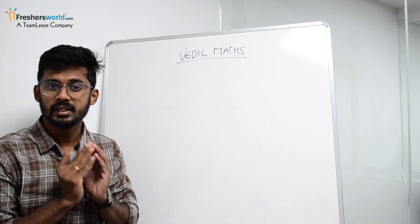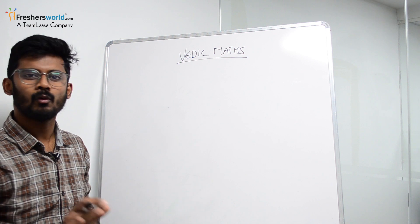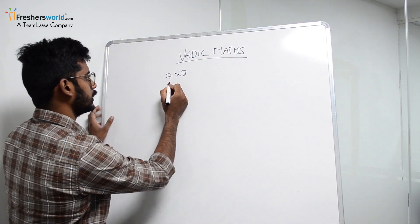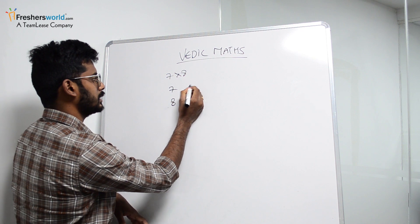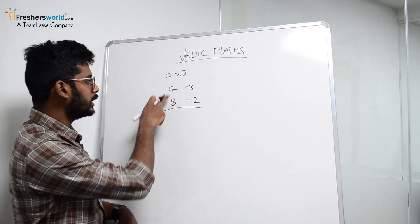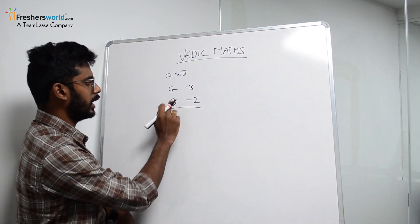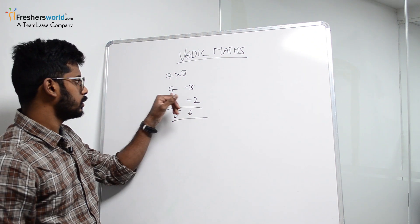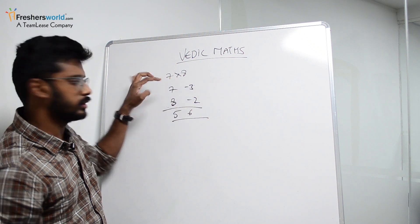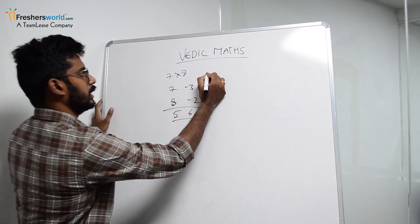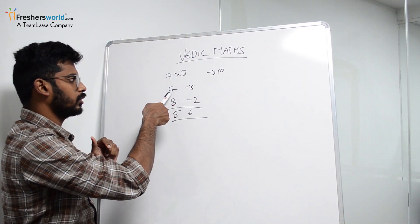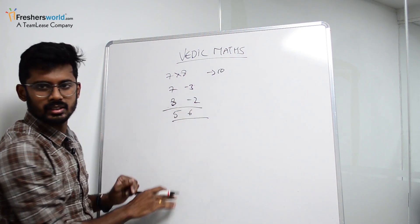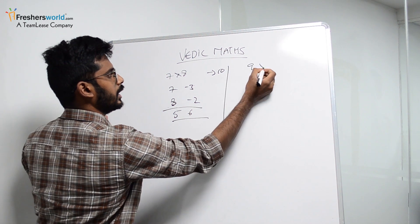Let's see how multiplication can be done in seconds. For example, 7 into 8 — take 10 as base. 7 is 3 away from 10, and 8 is 2 away. So 7 minus 2 is 5, or 8 minus 3 is also 5. Then 3 into 2 is 6. So the answer is 56. Write 7 and 8 vertically, take 10 as base, find how far each is from 10 — this is 3 and this is 2 — then either 7 minus 2 or 8 minus 3 gives 5, and 3 into 2 gives 6.